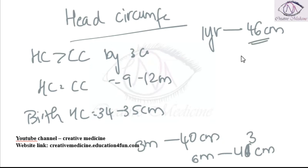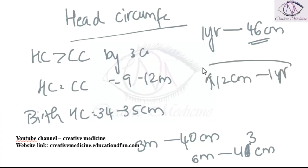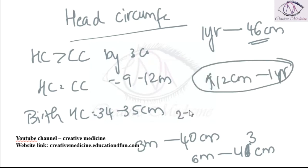There is an increase of 12 cm in the first year. The increase in head circumference is 2 to 3 cm in the second year, and 2 to 3 cm in the third year as well.